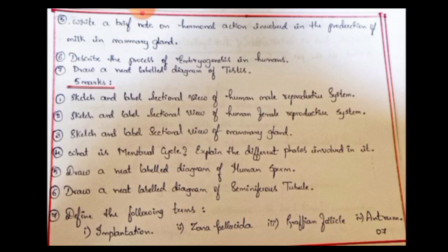Don't forget to mention the ampulla. Describe the process of embryogenesis in human beings — how the embryo develops. Next: Draw a neat labelled diagram of the testes or seminiferous tubules, with focus on labelling.